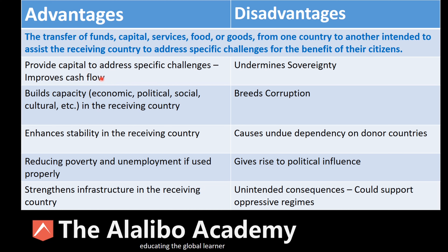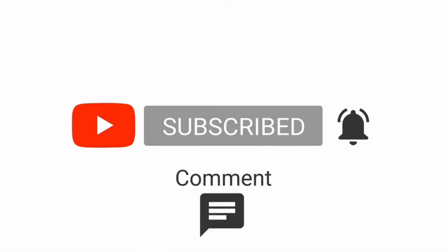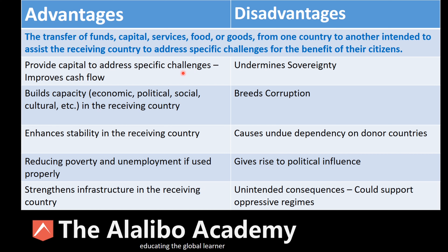In summary, the advantages of foreign aid are: it provides capital to address specific challenges and improves cash flow; it builds capacity economically, politically, socially, and culturally; it enhances stability; it reduces poverty and unemployment if used properly; and it strengthens infrastructure in the receiving country. Foreign aid has clear advantages, and if countries use the funds properly, they are able to achieve these goals.